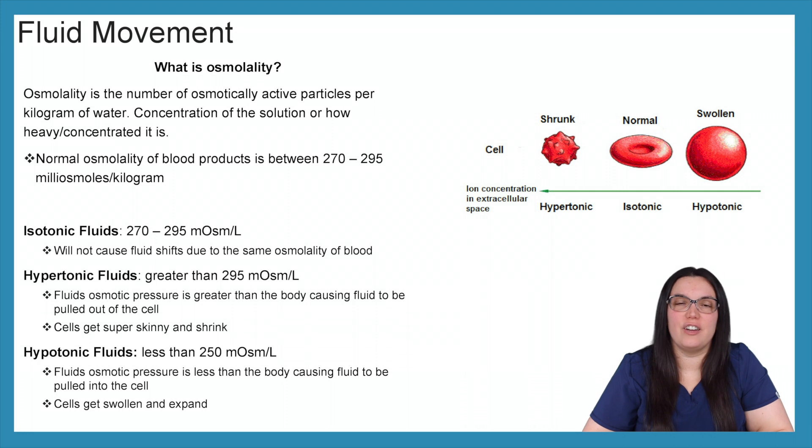In order to understand fluid movement, we have to understand osmolality. Osmolality is the number of osmotically active particles per kilogram of water. It's just a fancy way of saying the concentration of the solution or how heavy and concentrated it is. Normal osmolality of blood products is between 270 to 295 milliosmoles per kilogram.